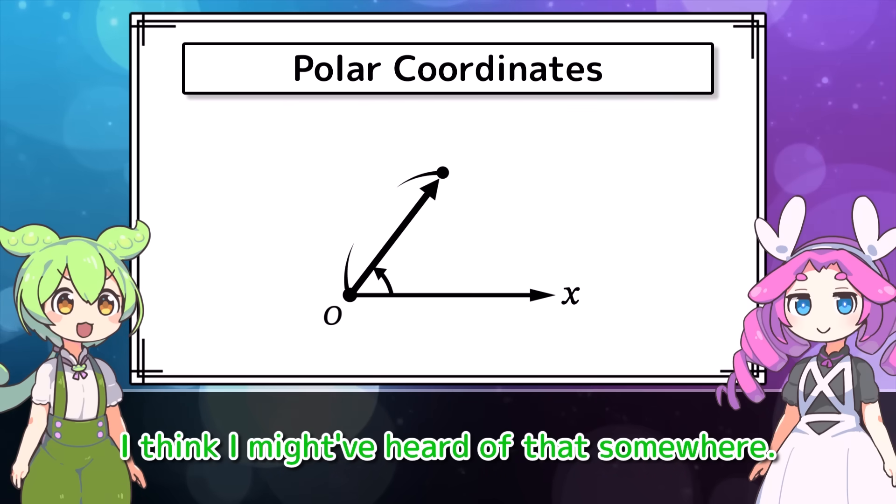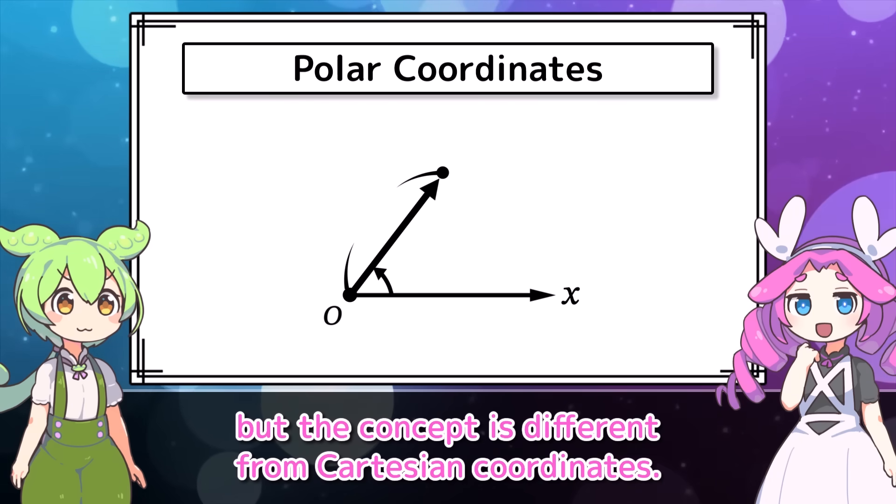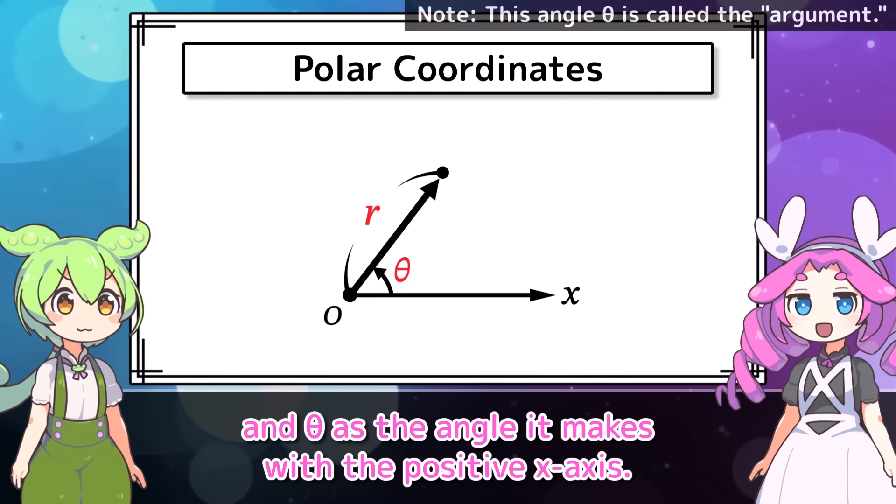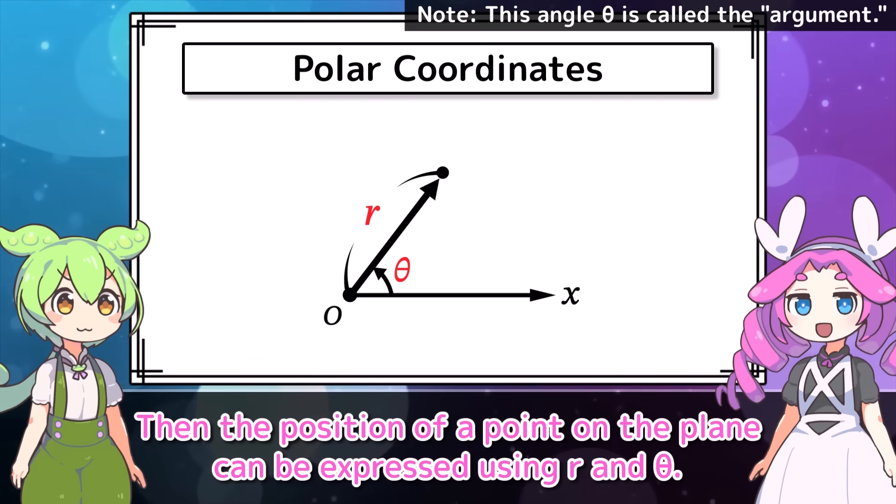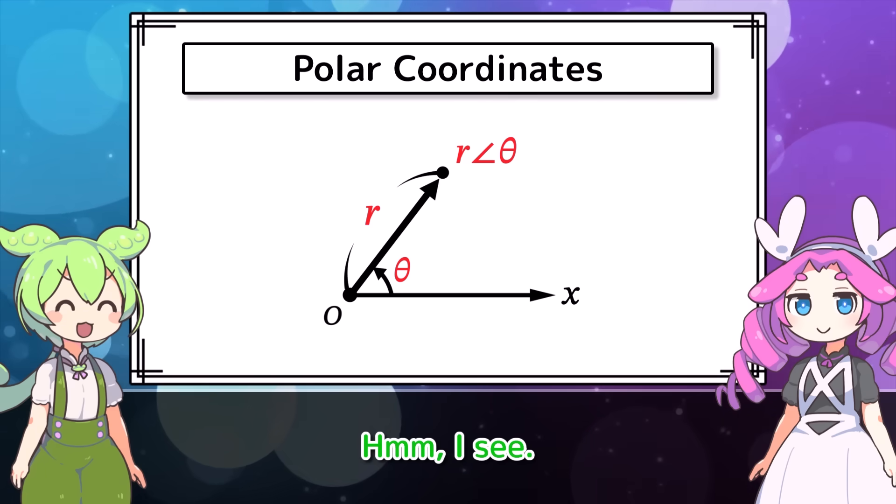Well now, no need to rush. Besides Cartesian coordinates, have you heard of something called polar coordinates? I think I might have heard of that somewhere. Polar coordinates also define a point's position, but the concept is different from Cartesian coordinates. Here we define r as the length of the vector, that is the distance from the origin, and theta as the angle it makes with the positive x-axis.